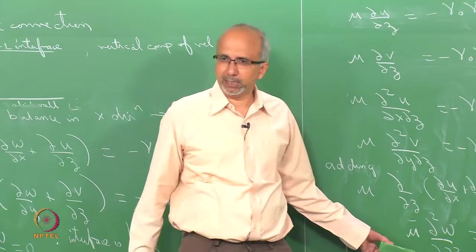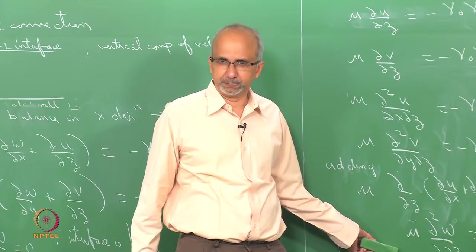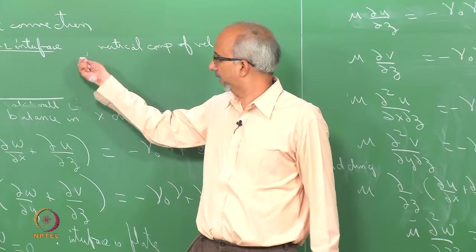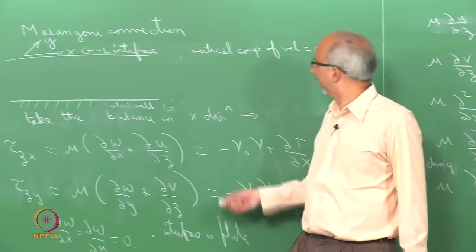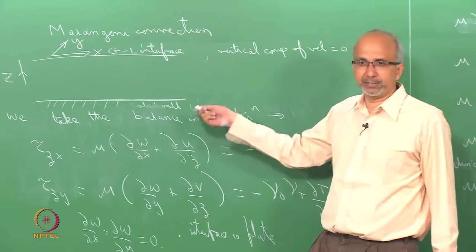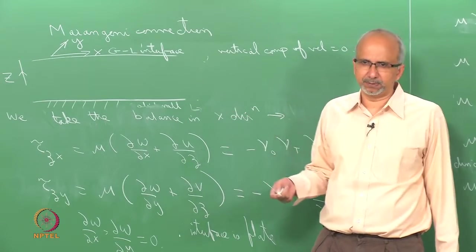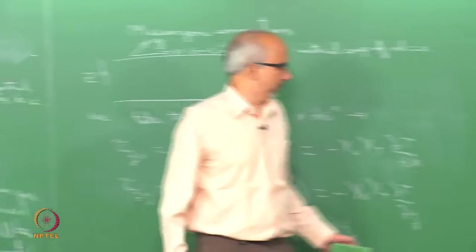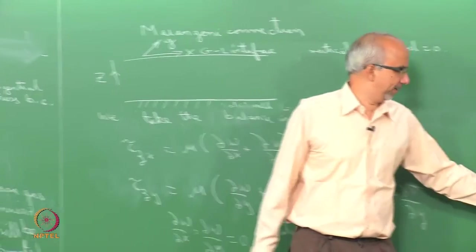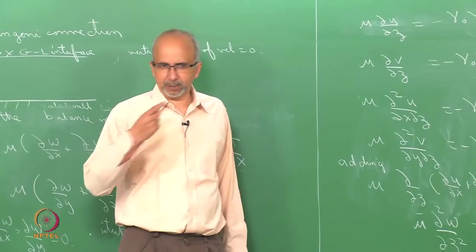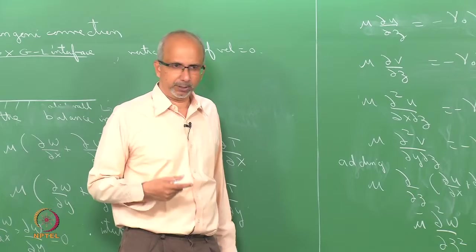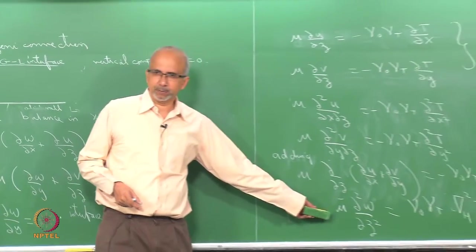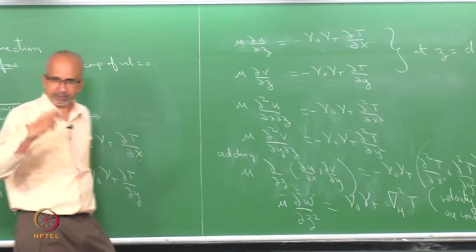This is the boundary condition you are going to use at the top surface, in addition to the other classical boundary conditions. When you solve your equation for the Marangoni stability problem or any Marangoni convection problem, at the interface you will use this boundary condition in addition to the other conditions. If you keep the interface moving, then you need to worry about how F changes.